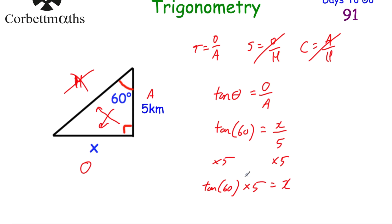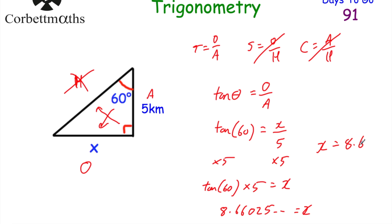Doing tan(60°) × 5 on our calculator gives 5√3, or 8.66025 and so on. So X equals 8.66 kilometres to two decimal places. That's the length of that side.